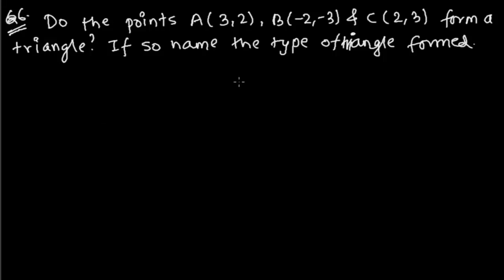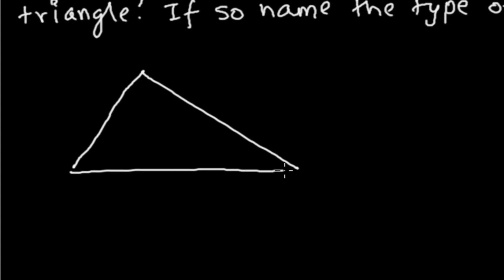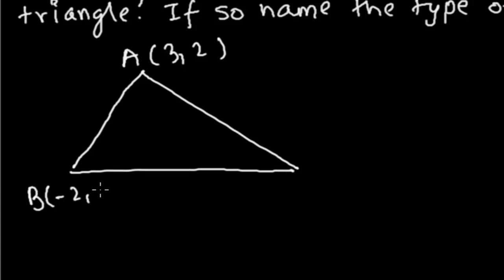These are the points given. Let me write them and make a rough diagram. Suppose this is A(3,2), B(-2,-3), and C(2,3). Suppose they are forming a triangle — then what happens?